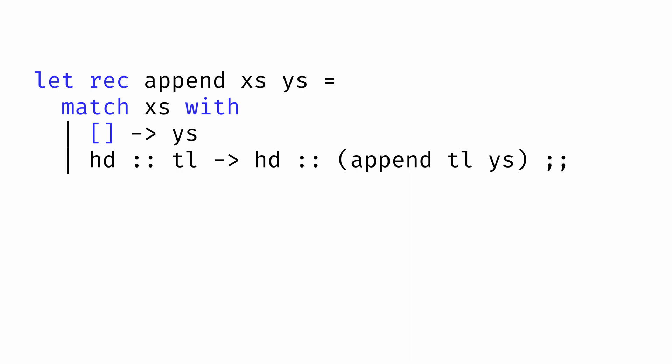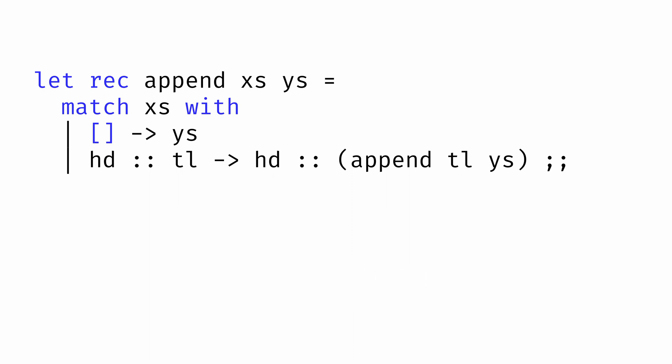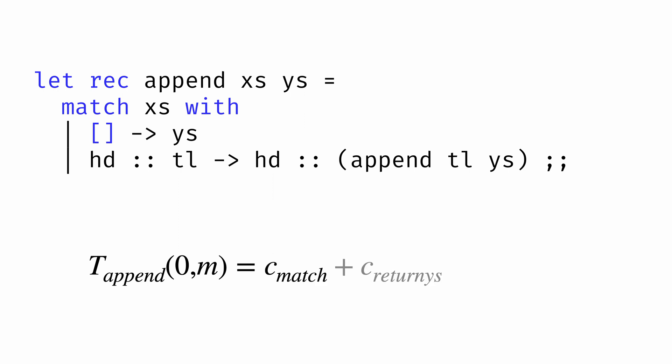Here's an OCaml function append that takes two lists as input and returns the list of one list appended to the other. What we'd like to do is write a mathematical function tappend that takes arguments n and m, and returns the amount of time required to run the append function on lists with n and m elements. When the first input is zero, the function matches against the empty list and returns y's — each of those operations takes some constant amount of time. So we can say the time for append on inputs of size 0 and m is just some constant c.